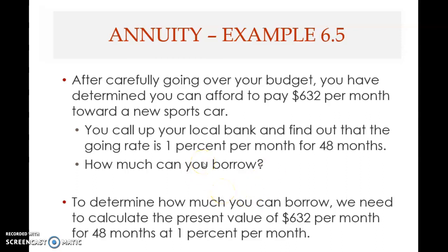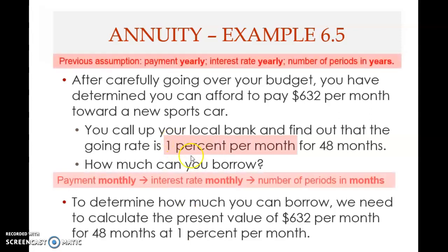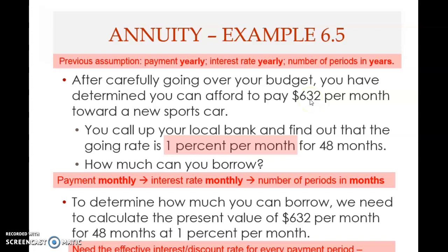There are three elements in this problem. The first element is the payment — $632 per month. The rate is one percent per month, and the term is 48 months. So all three must be in months. Previously in chapter five and the first part of chapter six, we assumed yearly payments with yearly interest rates and yearly periods. But here, the payment, interest rate, and number of periods are all monthly.